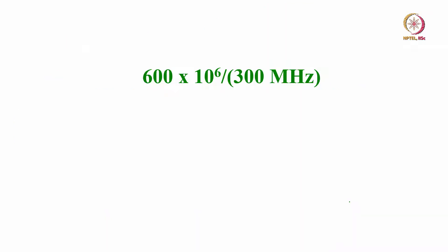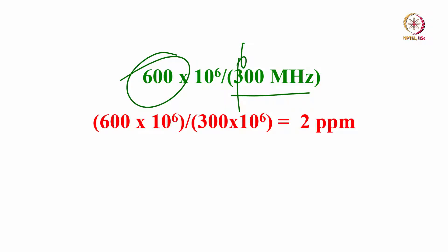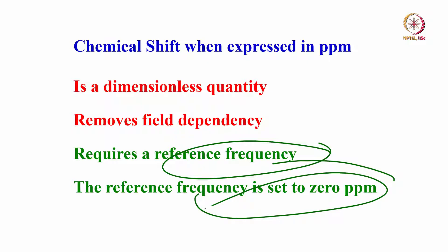If you do the simple mathematics, for example at 600 MHz, taking 600 × 10⁶ divided by 300, we get 2 ppm. Chemical shift when expressed in ppm is a dimensionless quantity, removes field dependency, and requires a reference frequency. The reference frequency is always set to 0. This is a very important point to remember.